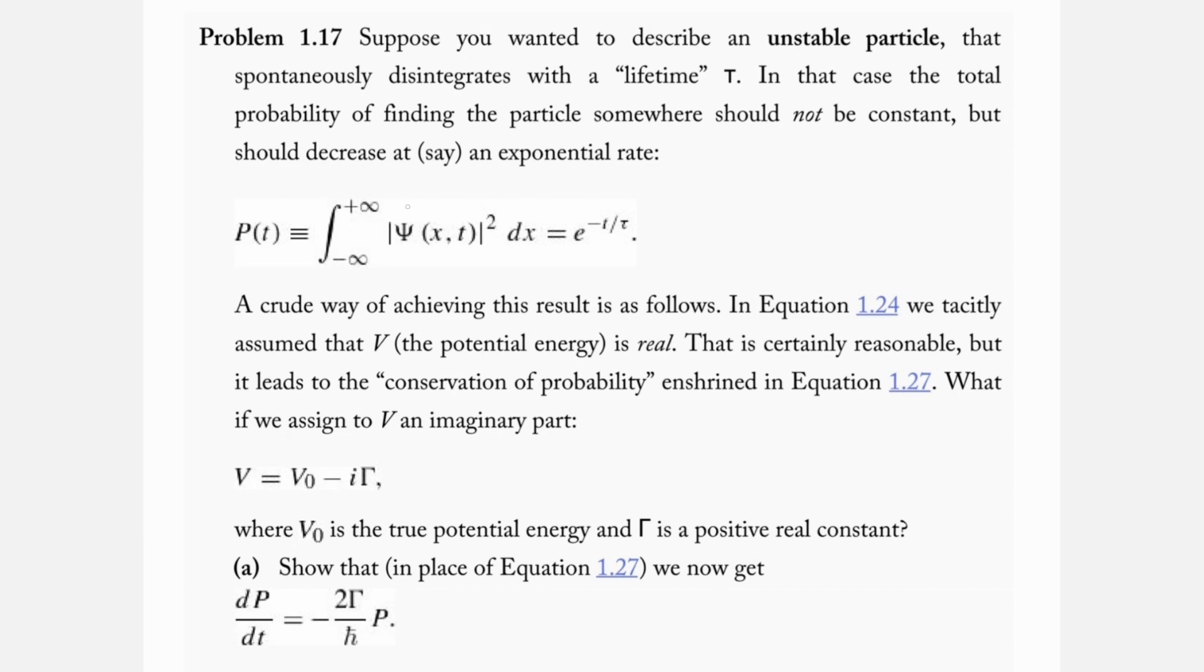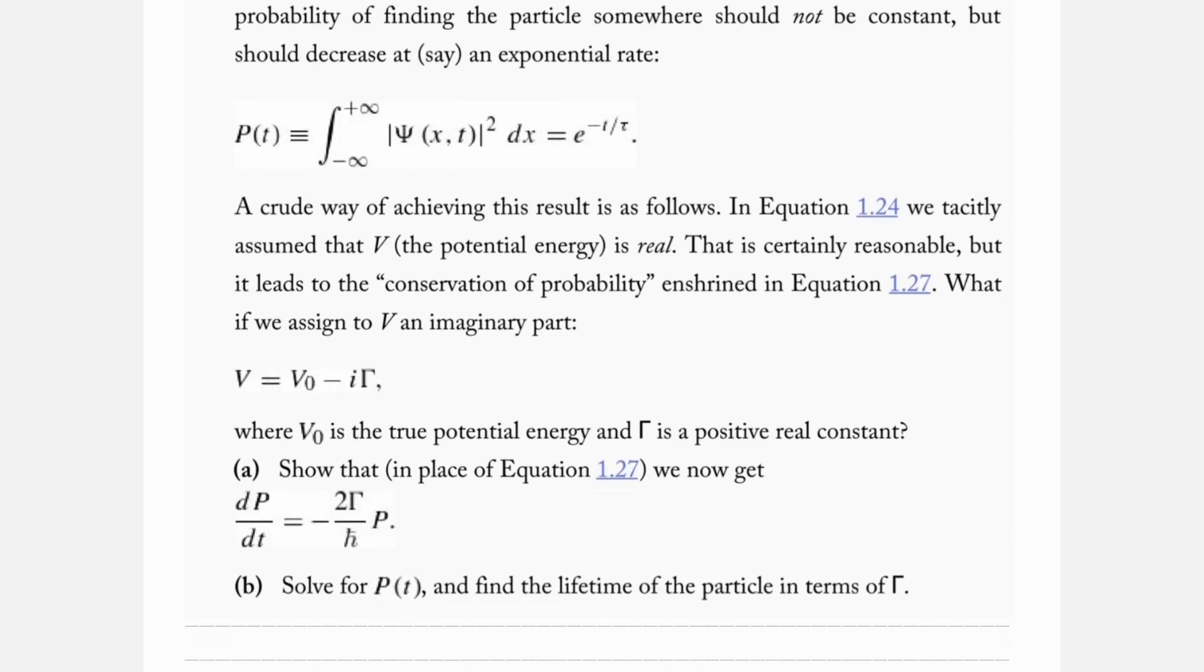Before we said that this was equal to 1, but now we're saying it's e to the minus t over τ. If we plug in t equals 0 we get e to the 0 which is 1, so at t equals 0 the particle is still there, but anytime after 0 maybe it's not and there's some probability that it's already disintegrated.